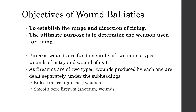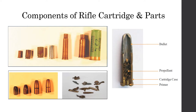The main objectives of wound ballistics are to establish the range and direction of firing, and to determine the weapon used. Firearm wounds are fundamentally of two types: entry wound and, in some cases, exit wound. Firearms are also of two types: rifled firearms producing gunshot wounds, and smooth bore firearms producing shotgun wounds.